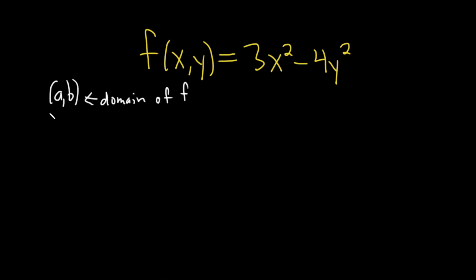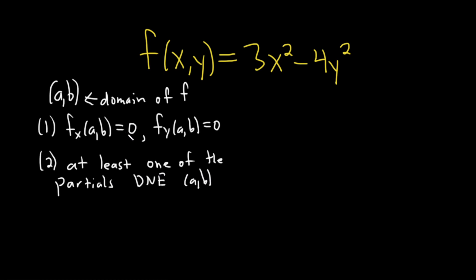And it's a critical point if either one, both partials are equal to zero at this point, so it must be true for both of them, or at least one of them is undefined at this point. In other words, it doesn't exist. So at least one of the partials does not exist at (a, b). So that's what it means for (a, b) to be a critical point. It's just an ordered pair in the domain of f where either both partials are zero or at least one of them does not exist.